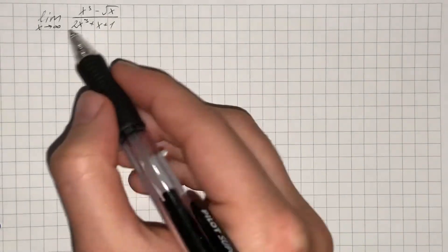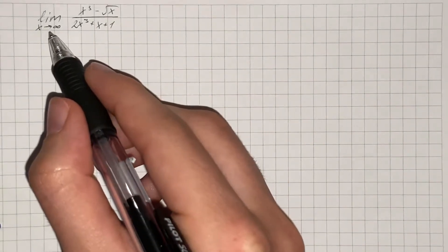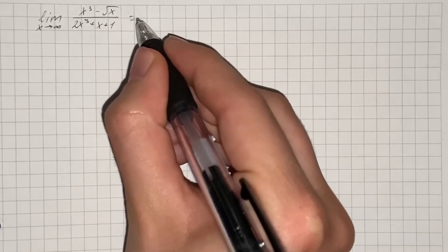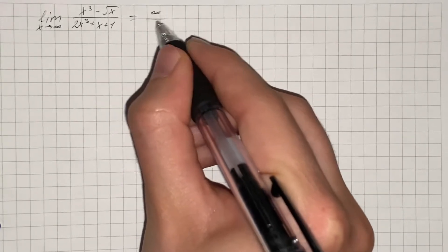We have to evaluate the given limit, and if we just directly substitute x with infinity, we get indeterminate form infinity over infinity.